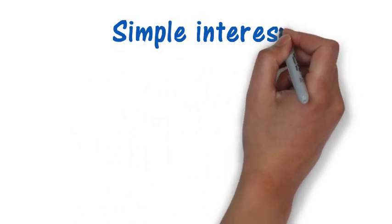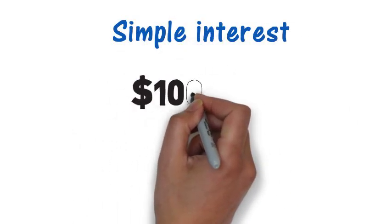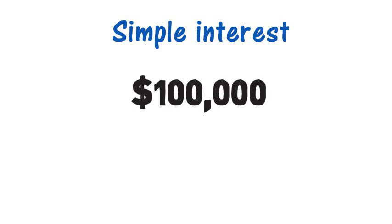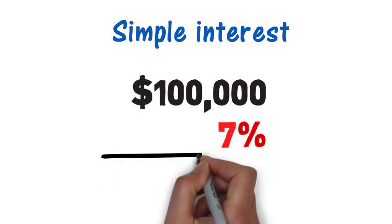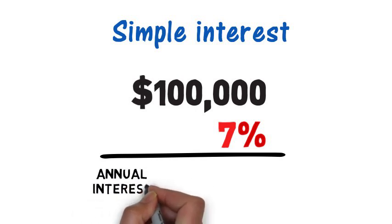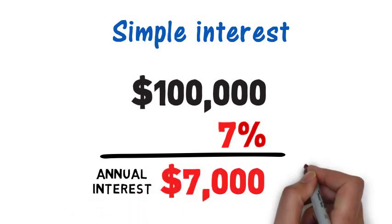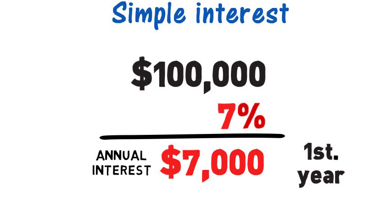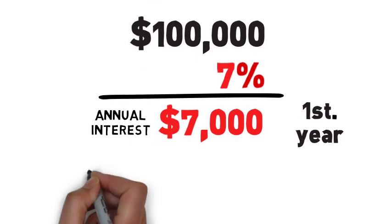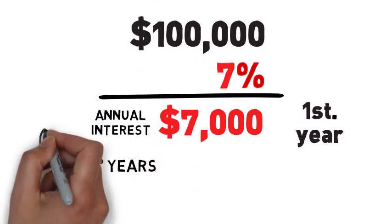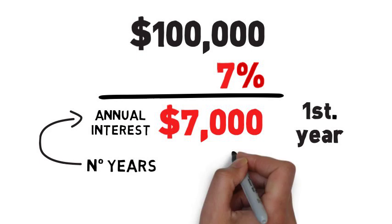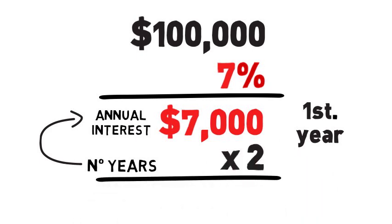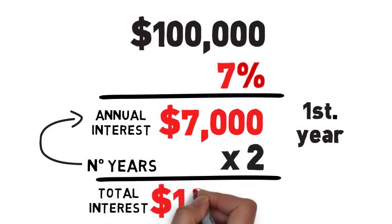With simple interest, we take the principal, which is the loan amount of $100,000, and we multiply that by the interest rate of 7%. We come up with an annual interest of $7,000. This is for the first year. If we want to calculate additional years, we just take the number of years and multiply it by the annual interest. So the annual interest of $7,000 multiplied by 2 years gives you a total interest of $14,000.